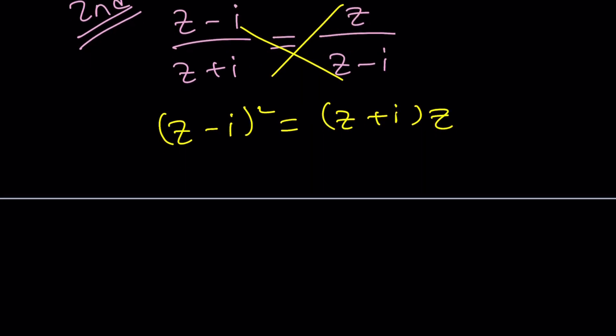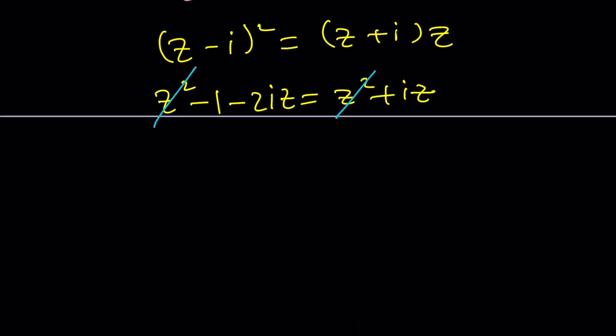Let's go ahead and distribute. If you expand the second power, it's z squared plus i squared, which is minus 1, minus 2iz. On the right-hand side, when you distribute, you get z squared plus iz. And now we can simplify z squared, which makes this a linear equation, which makes it a lot easier to solve.